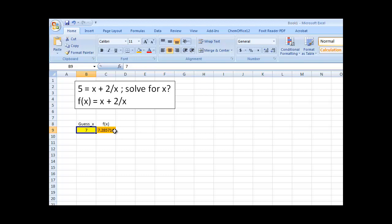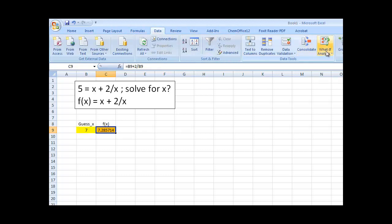So, we go up here and say data. We have all these tabs up at the top. Data. What if analysis. And over here, what if analysis. Goal seek.